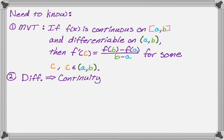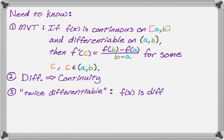A third thing we need to know, for this specific type of problem, is what 'twice differentiable' means. It will come up in a lot of problem statements — you'll just be told that f(x) is a twice differentiable function. What twice differentiable means: f(x) is differentiable, and the 'twice' part means that f' is also differentiable. So it's really telling you f(x) is differentiable and f' is differentiable. And the fourth thing we need is the intermediate value theorem, which hopefully you already know because it's important.